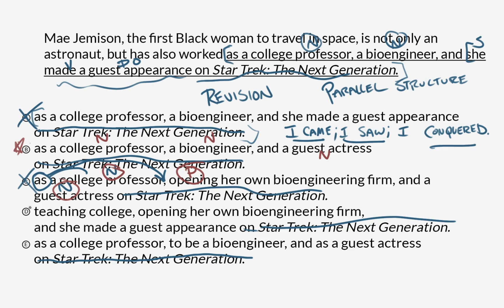Move on to answer D: 'teaching college' — that's a participle; 'opening her own bioengineering firm' — another participle; 'and she made a guest appearance on Star Trek: The Next Generation' — that's its own clause with a subject, verb, and direct object. This is the same error as the original sentence: a clause hanging inside a list. That's not parallel.